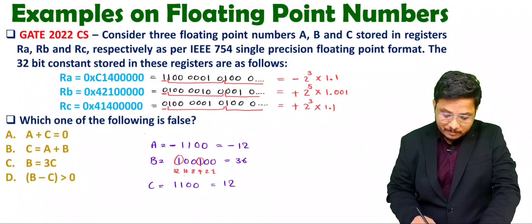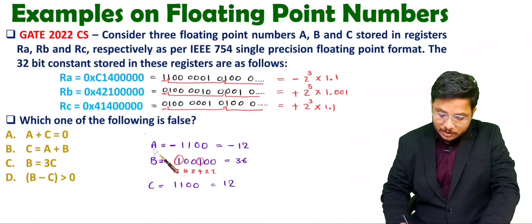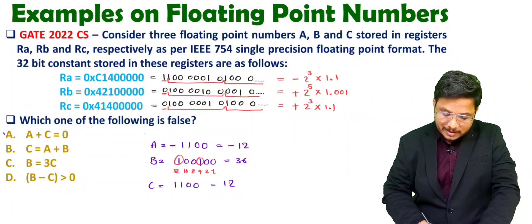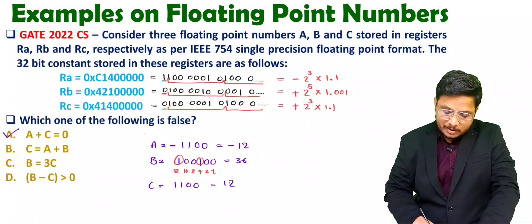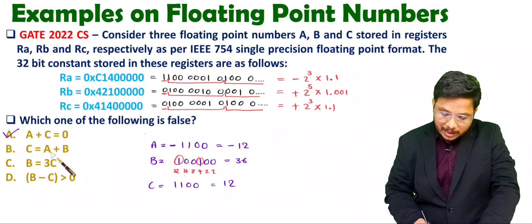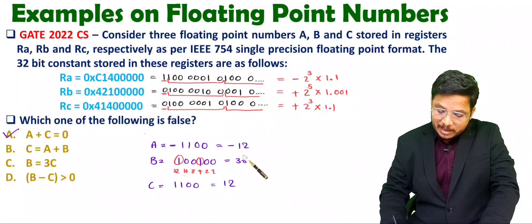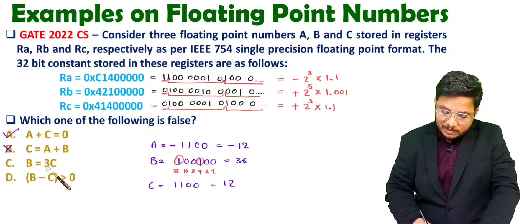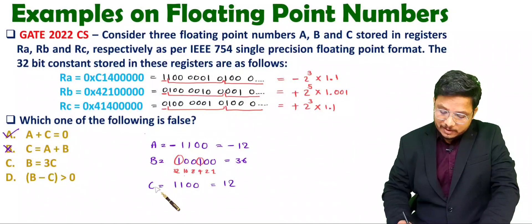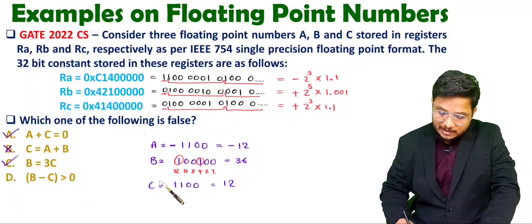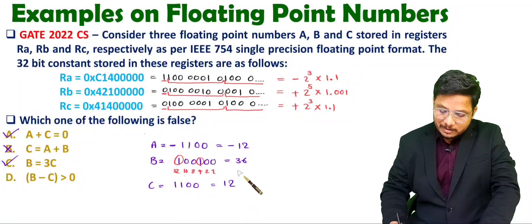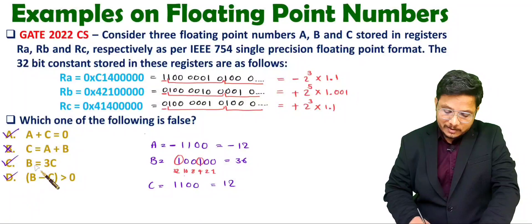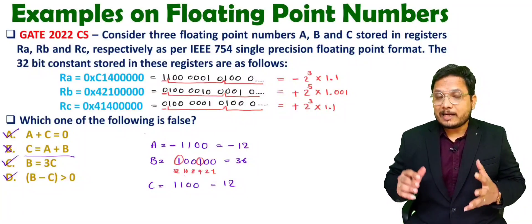Now we check the relations. A plus C equals minus 12 plus 12 equals 0 — that is correct. C equals A plus B: A plus B is minus 12 plus 36 equals 24, but C is 12, so this is the false statement. B equals 3C: 3 times 12 is 36, which equals B — correct. B minus C is 36 minus 12 equals 24, which is greater than 0 — correct. So the false statement is C equals A plus B.